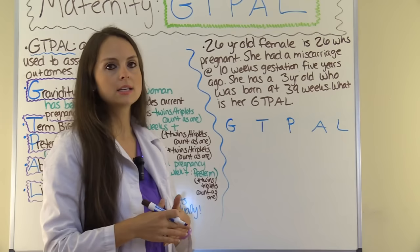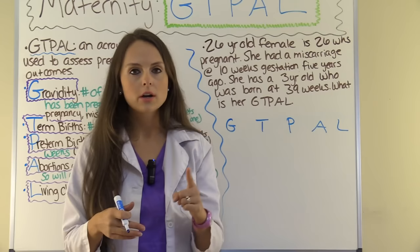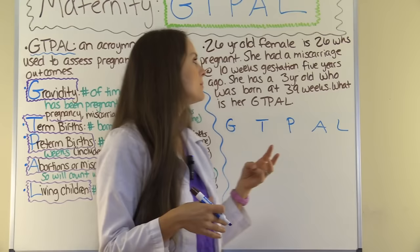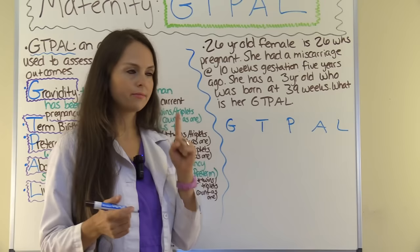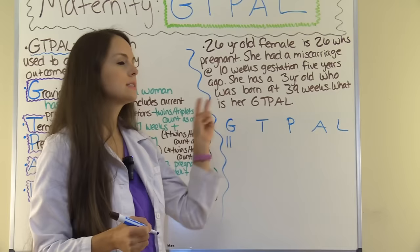First let's look at gravida — the number of times the woman has been pregnant, including the current pregnancy and any miscarriages or abortions. The female is 26 weeks pregnant, so she is pregnant right now. She also got pregnant but miscarried at 10 weeks. And she has a three-year-old born at 39 weeks. So she has been pregnant a total of three times — G equals 3.